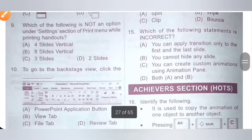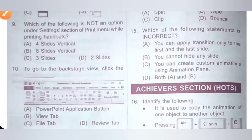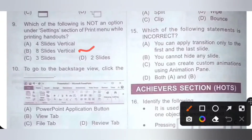Ninth one. Which of the following is not an option under the settings section of the print menu while printing a handout? Option A: 4 slides vertical. Option B: 8 slides vertical. Option C: 3 slides. Option D: 2 slides. 8 slides vertical is not an option under the settings option of the print menu while printing a handout. Option B is the correct answer.